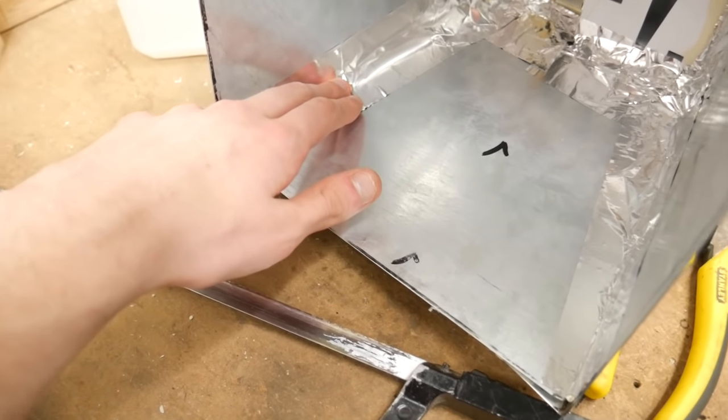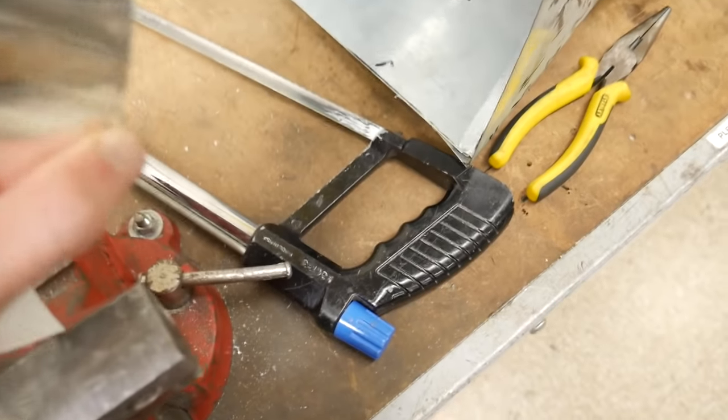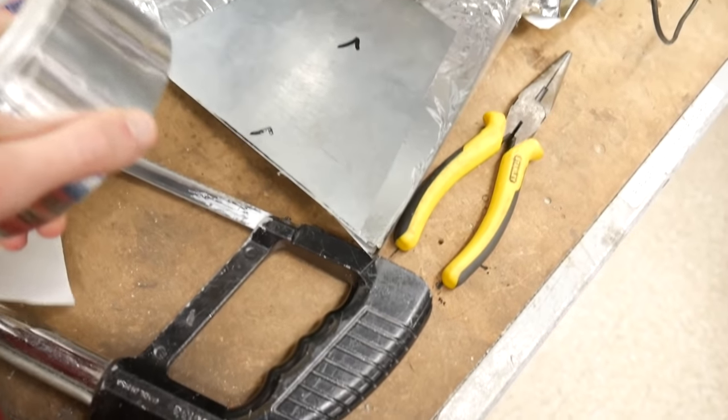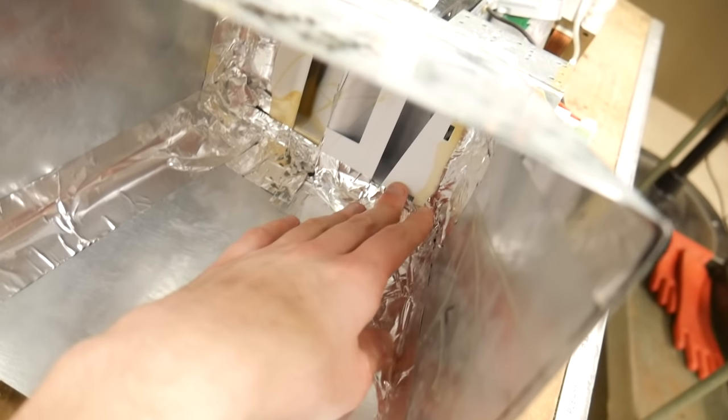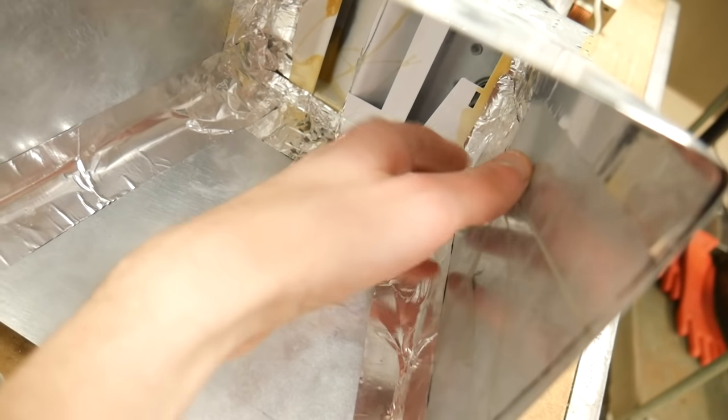Also inside the horn I put aluminum tape, that's down here actually, here we go. Aluminum tape on the inside to prevent any waves from getting stuck in crevices, or more importantly to make all of these edges flush with the waveguides and the horn.